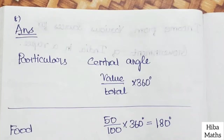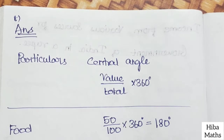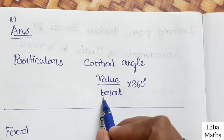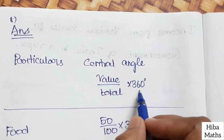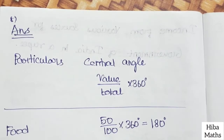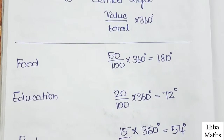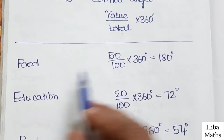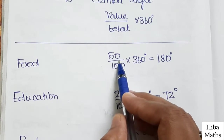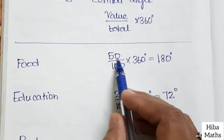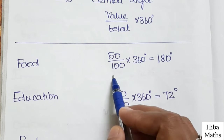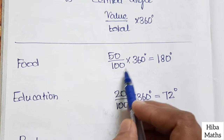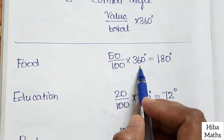The given particular is the central angle. The central angle formula is: value divided by total, into 360. For food, it is 50%, so 50 divided by 100 into 360.